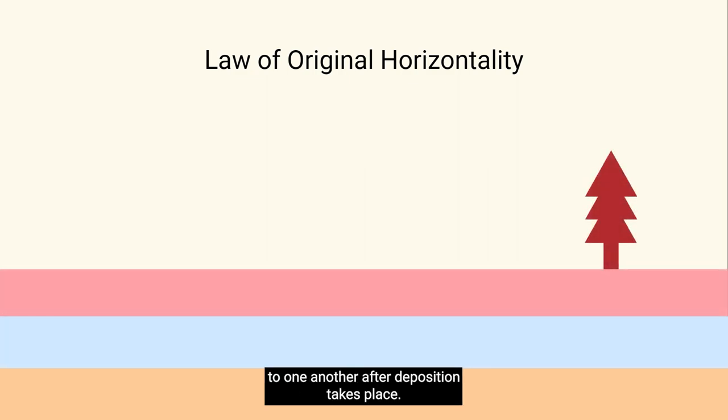Before we talk about strike and dip, we should first discuss the law of original horizontality. This law states that all rock layers are originally horizontal to one another after deposition takes place.